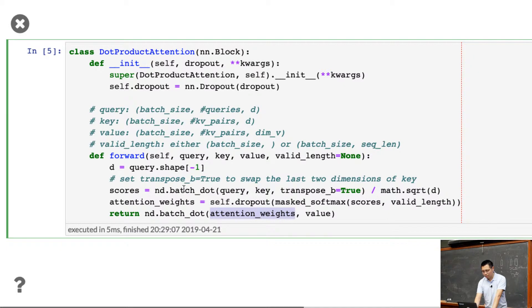So this is an implementation of the attention layer. Basically, easy to understand. It's compute scores, compute the softmax, the attention weights, and then apply the weights to the values. So that's three lines of code. Any questions so far?